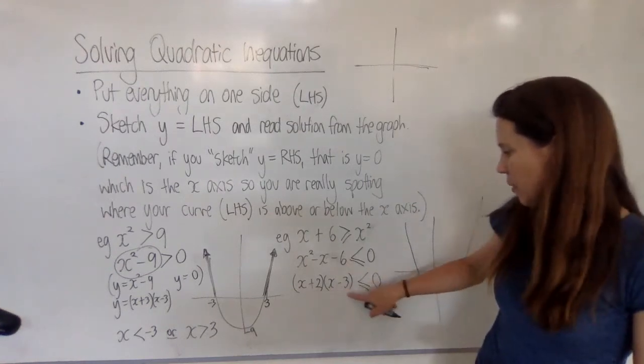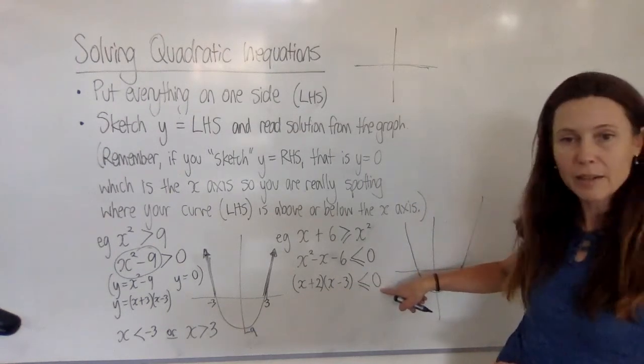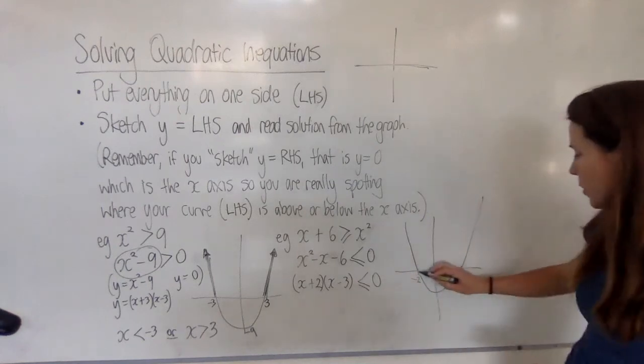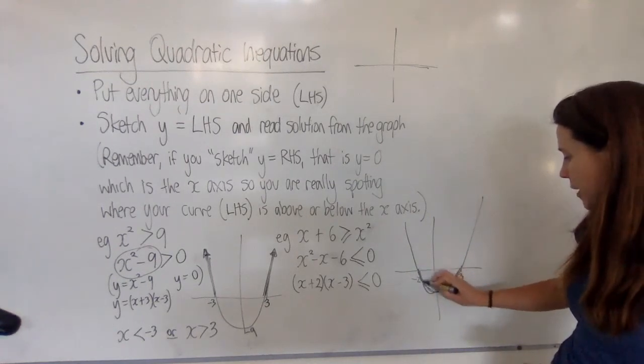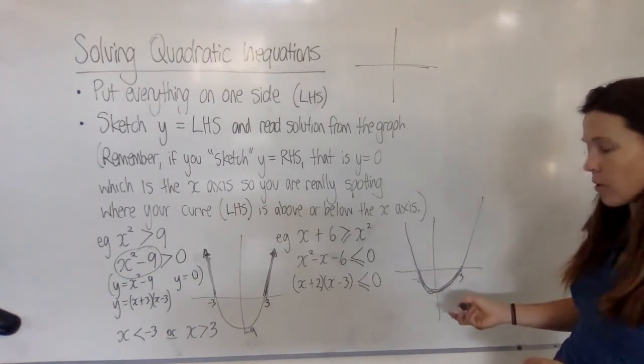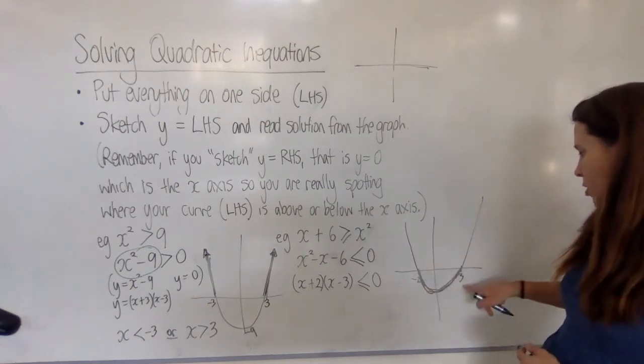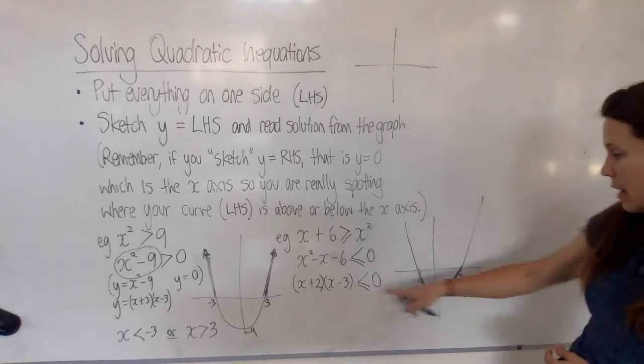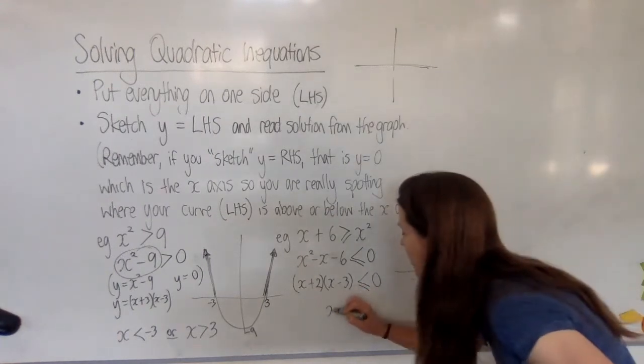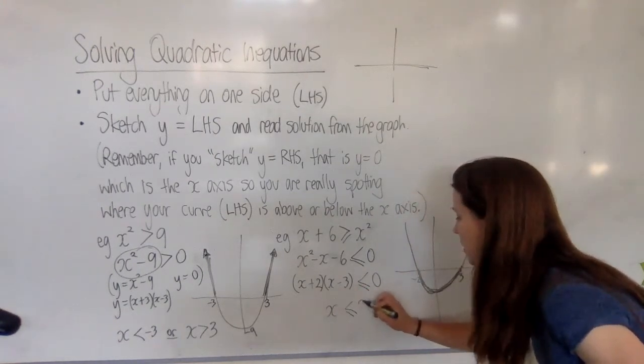And I want the part where the parabola is smaller than the line y equals 0. In other words, I want this part here that's below ground, as I like to think of it. So what are the x values that are down there? Well, they're the x values between minus 2 and 3, and they can be equal to them as well. So my solution looks like this.